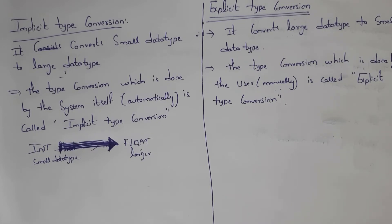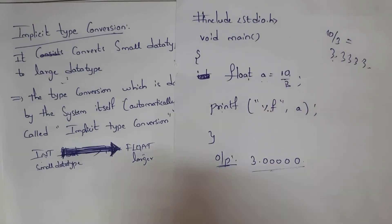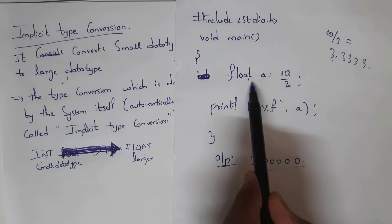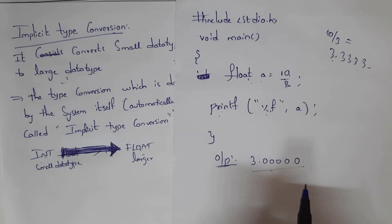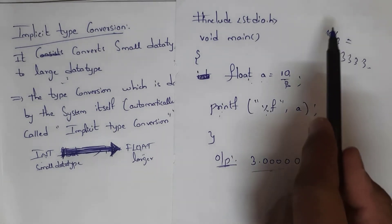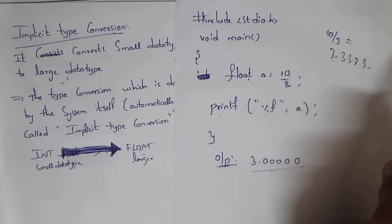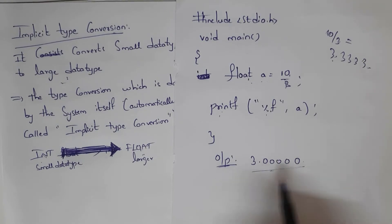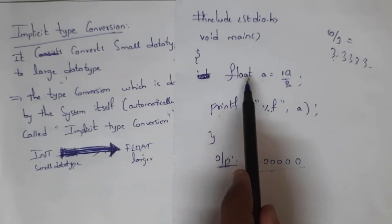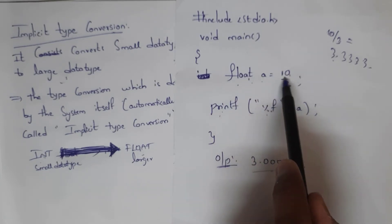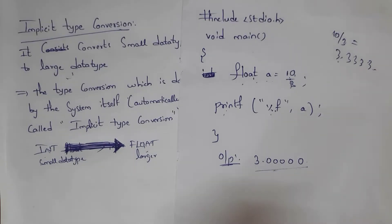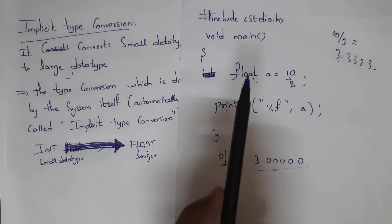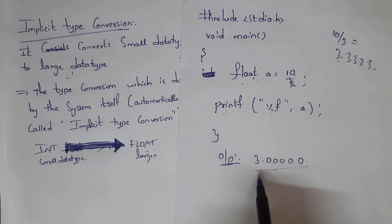Here is an example of explicit type conversion. In this program I written: float a = 10 / 3, then printf("%f", a). I got output as 3.000, but the actual value of 10 / 3 is 3.333 — which is the wrong value. The reason I got the wrong output is because even though I declared the data type as float, the values 10 and 3 are both integers. In explicit type conversion, the system is unable to convert integer values to float automatically, so I got 3.000.